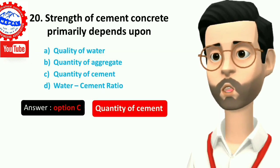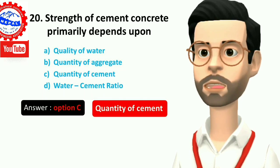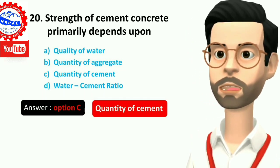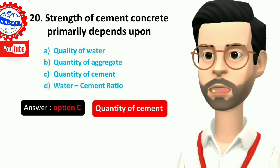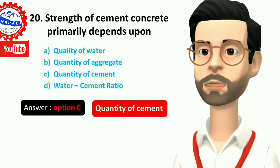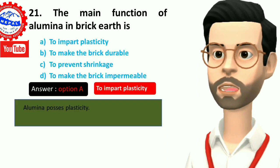Twenty, strength of cement concrete primarily depends upon: A) quality of water, B) quantity of aggregate, C) quantity of cement, D) water cement ratio. Answer is option C, quantity of cement.